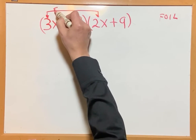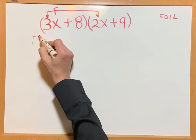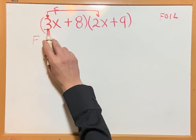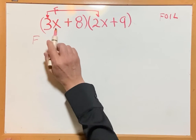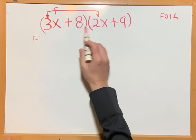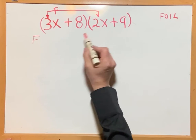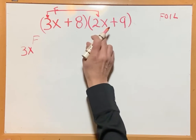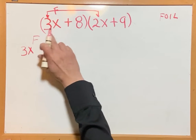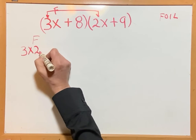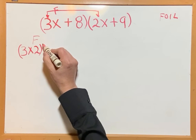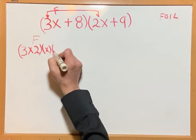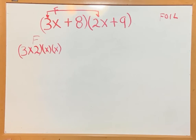F is for the first term. That means F is the product of the first terms of my binomials. That means 3x times 2x — so 3 times 2, and x times x.